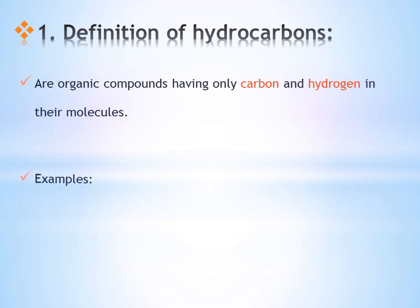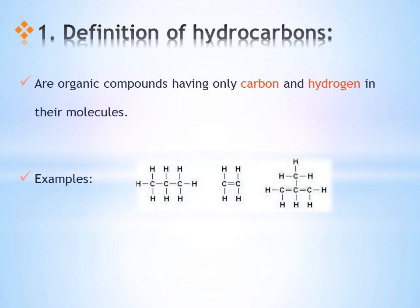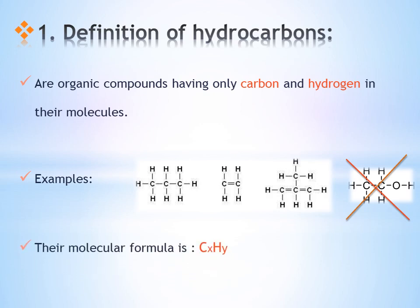For example, these three molecules are hydrocarbons due to the presence of only carbon and hydrogen atoms. However, this one contains oxygen beside the carbon and hydrogen atoms, so it is not a hydrocarbon. Therefore, the general molecular formula of a hydrocarbon is CxHy, where X is the number of carbon atoms and Y is the number of hydrogen atoms.